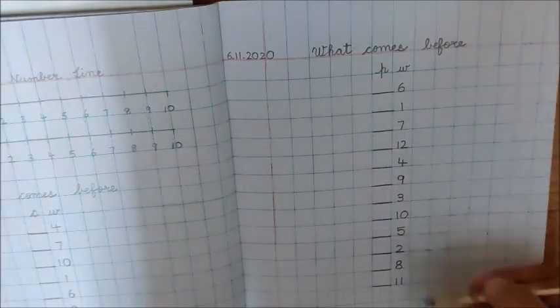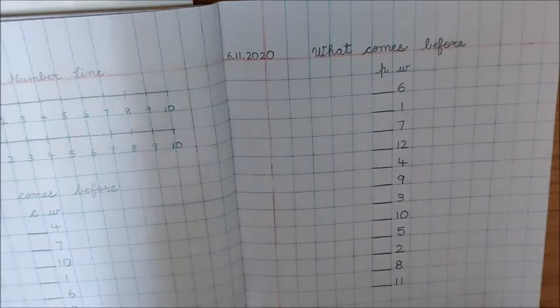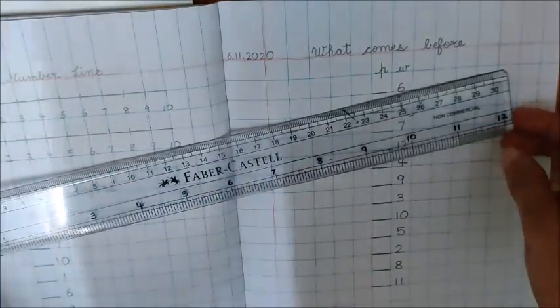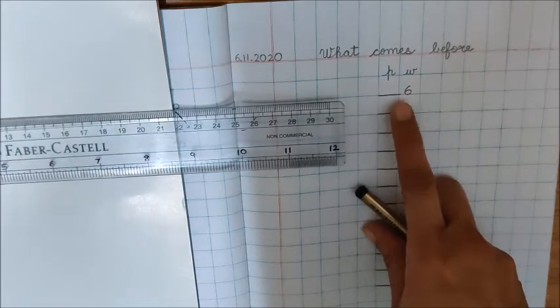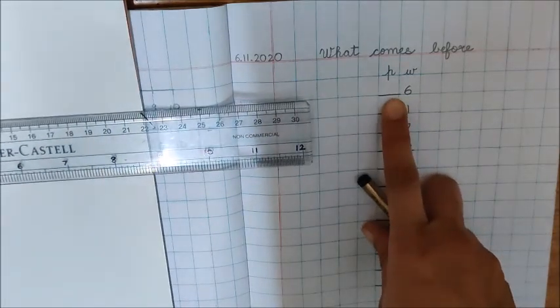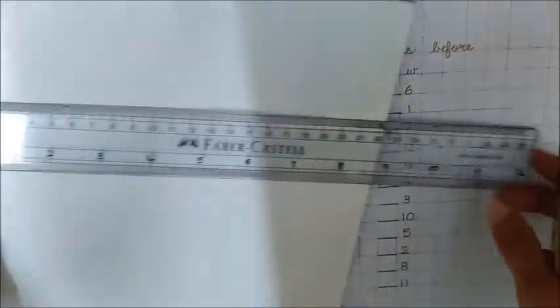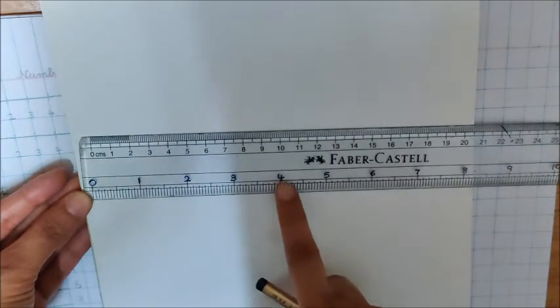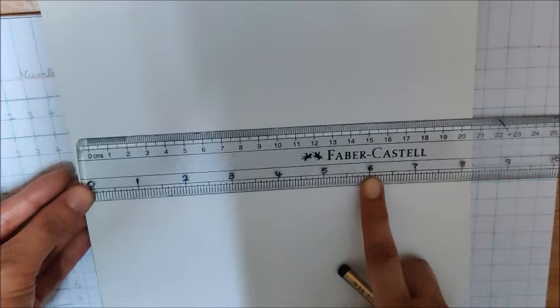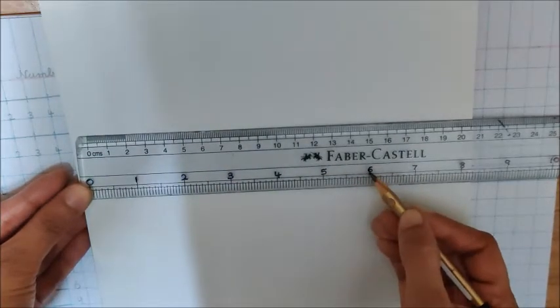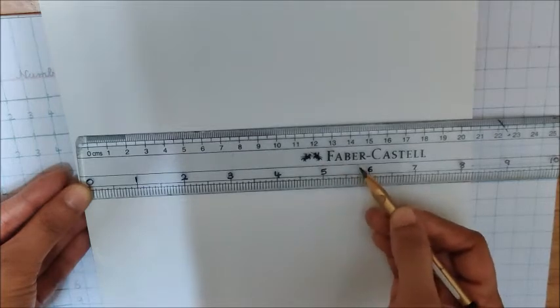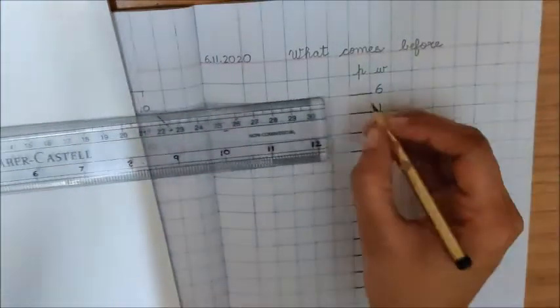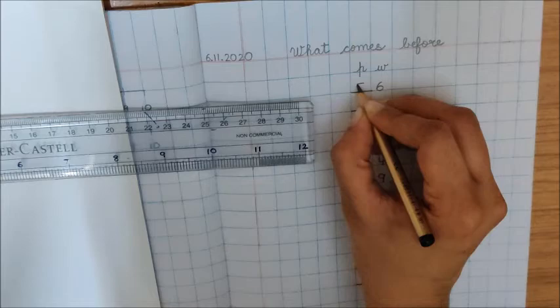Now, children, it's time to find the answers. For this, you need your 12-inch scale. Here is my 12-inch scale, children. Now, what is the first number? 6. So, we have to find the answer what comes before 6. Look for number 6 on the number line. Where is it? I found it. It's here, number 6. So, children, what comes before 6? 6 se pehle kya ata hai? 5. 5 comes before 6. So, here, write down 5.